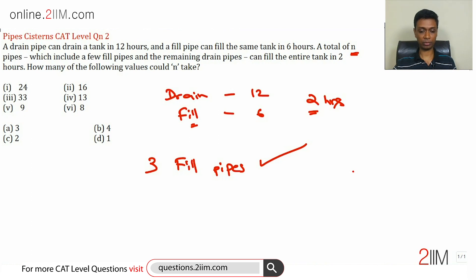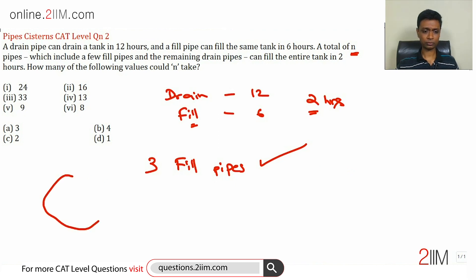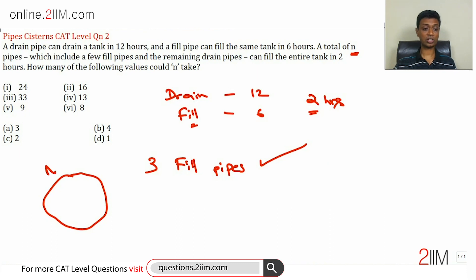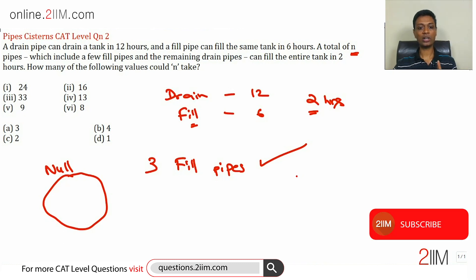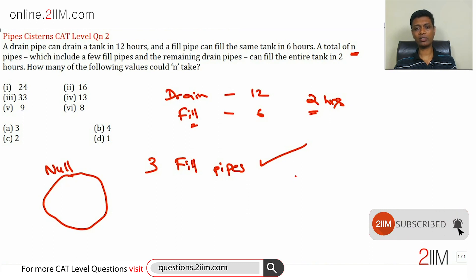Now, let's assume a drain pipe is present. One drain pipe drains in 12 hours and one fill pipe fills in six hours. I want to create a system where drain pipes and fill pipes in some combination offset each other — I'll call this a null system, meaning drain and fill put together give me nothing. How many drain pipes do we need to offset one fill pipe?